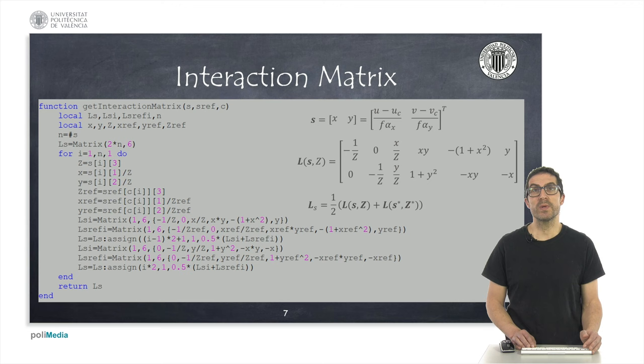The interaction matrix relates the velocities of the features in the image plane to linear and angular velocities of the camera reference frame. This matrix, therefore, has as many rows as twice of detected features and six columns, corresponding to the three linear velocities and the three angular velocities in the 3D space.